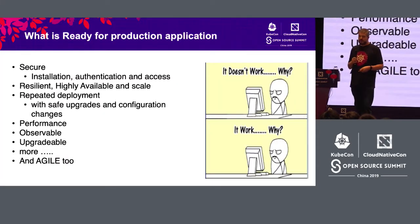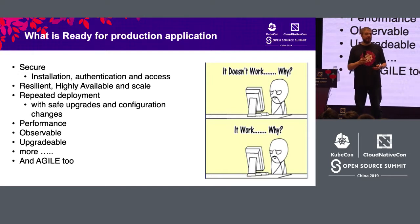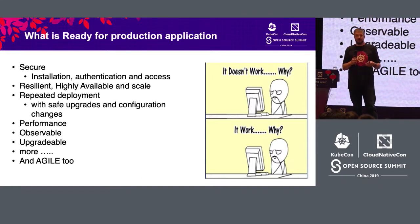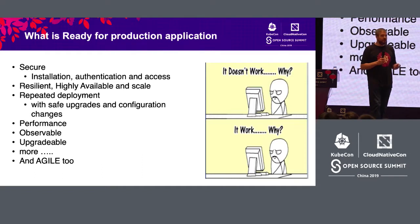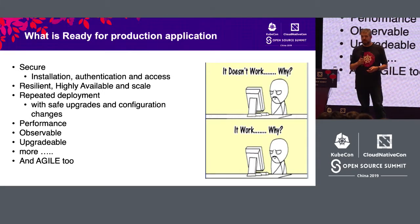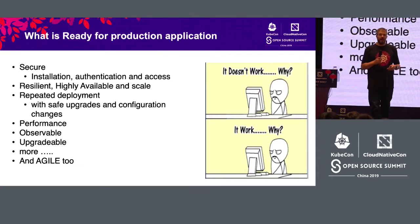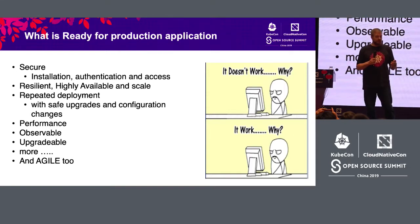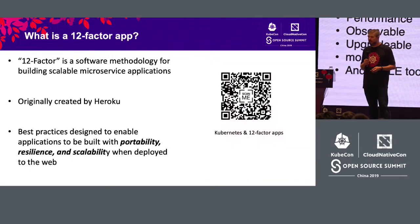When you think about what's required for a production application, there's a number of key factors beyond just does my code function correctly. You need to think about how secure is the application, so managing TLS certificates becomes a really important aspect. You have to think about how resilient is the application — does it respond correctly to failure? And as you manage the application, how does it tie into the observability aspects? How do I actually measure its health and ensure it's running correctly on an ongoing basis?